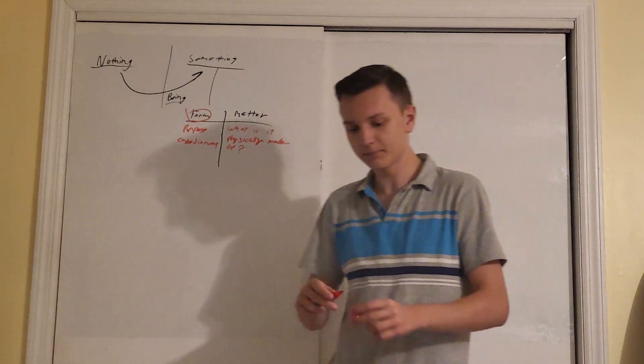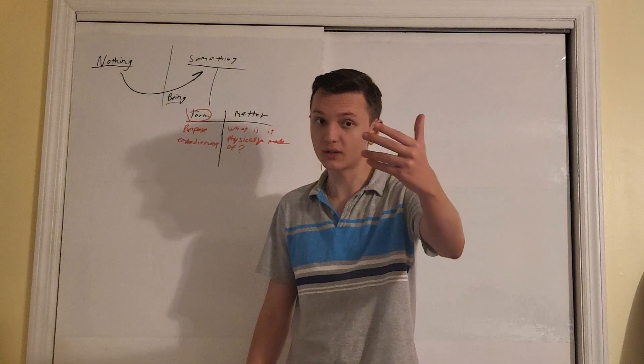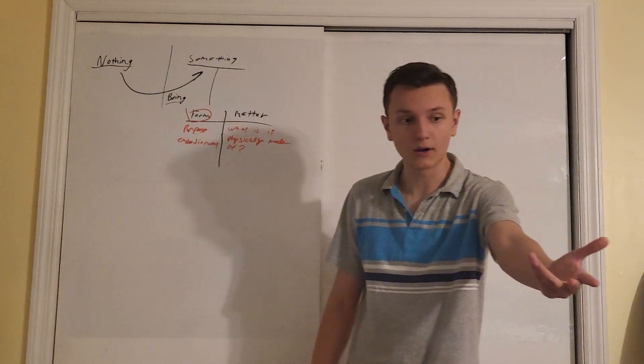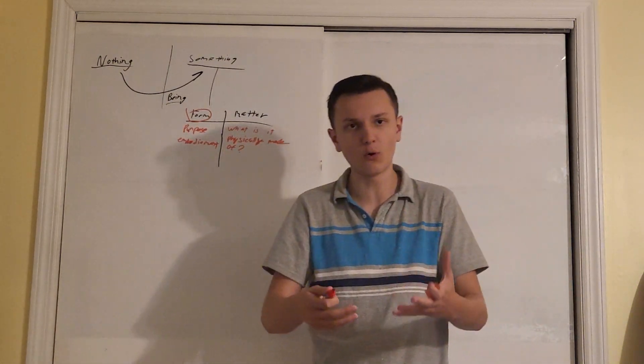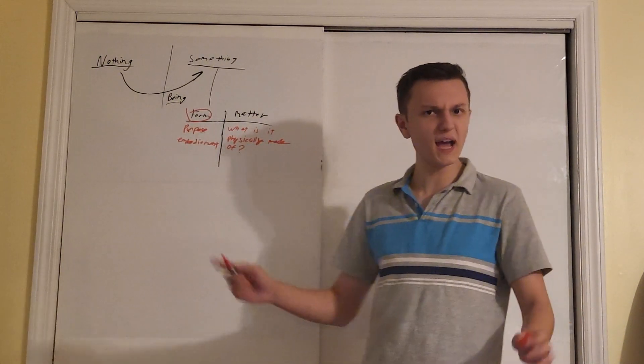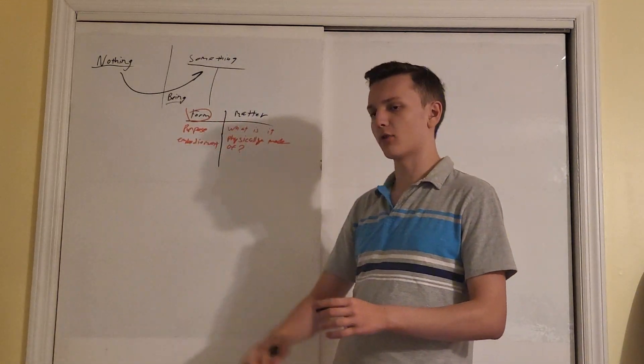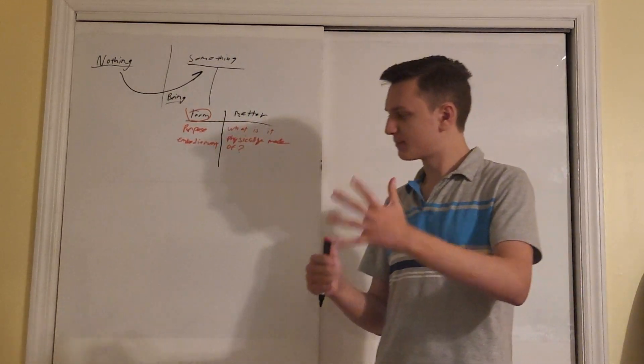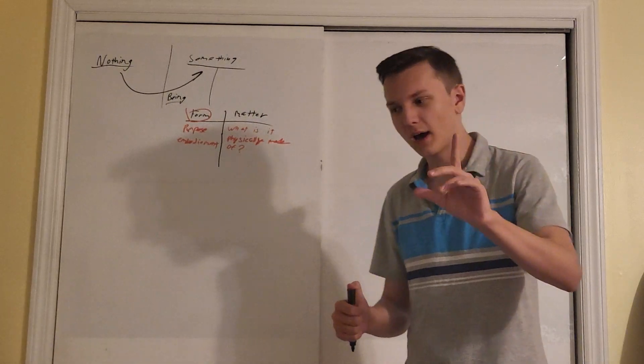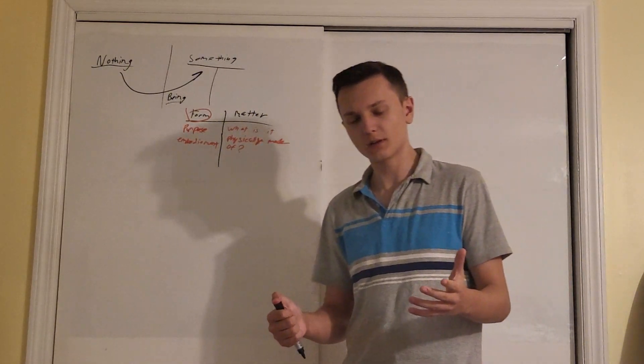A chair can be used as a desk, but it would be more effectively used as a chair. They're both made of wood. They're both made of the same matter. The thing that differentiates them here in this case is the form. Now you can have it the other way around. You can have a desk made of metal and you can have a desk made of wood. They both have the exact same form, the exact same purpose, but why are they different? Because their matter is different.